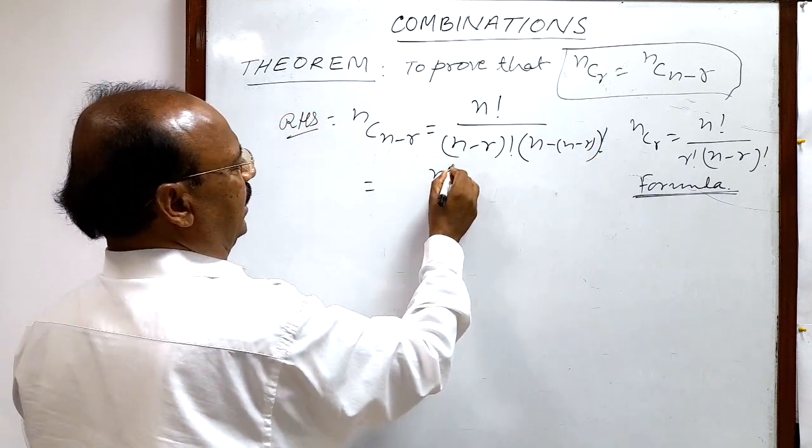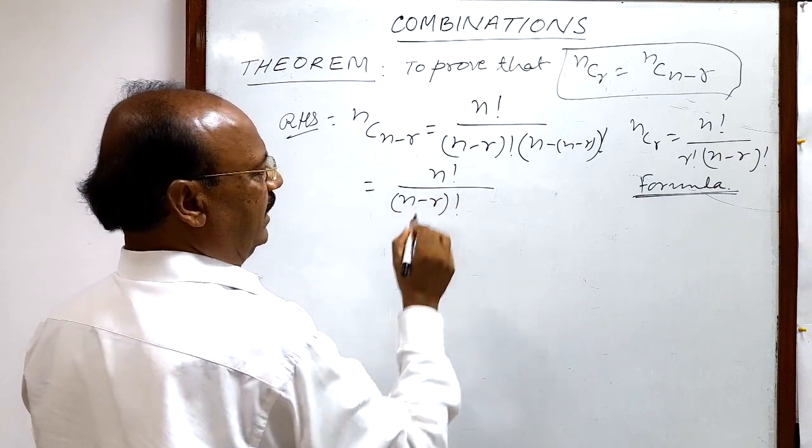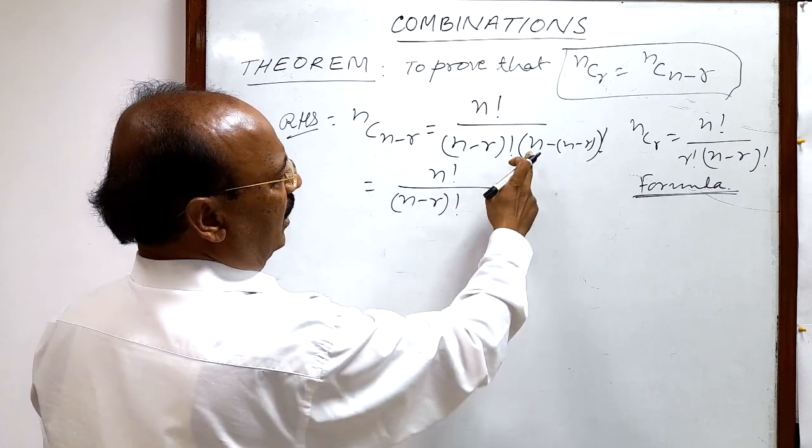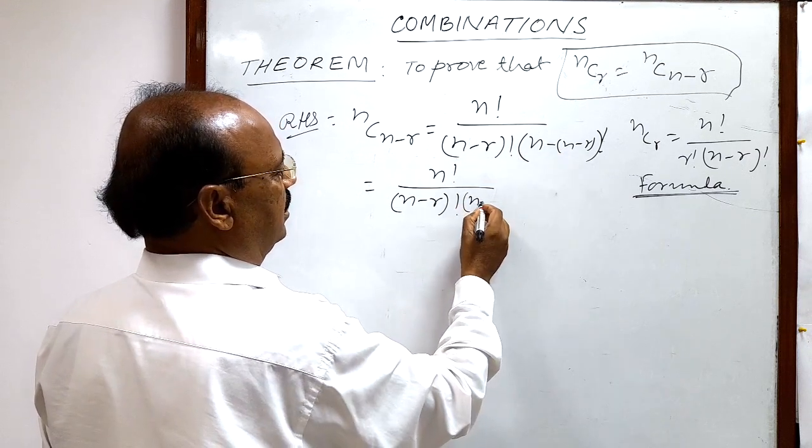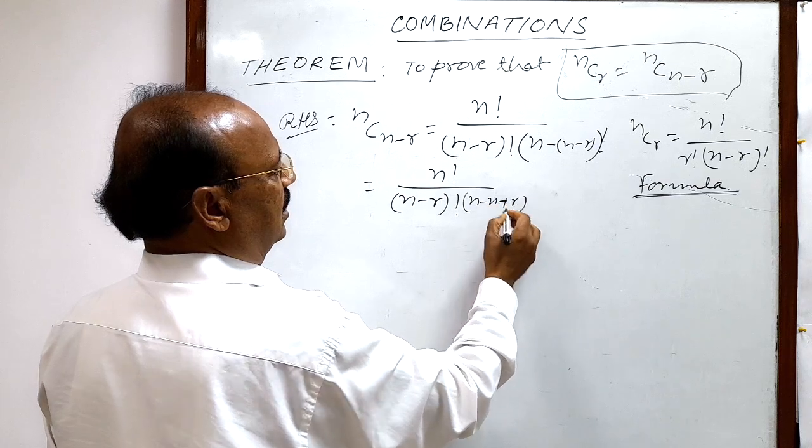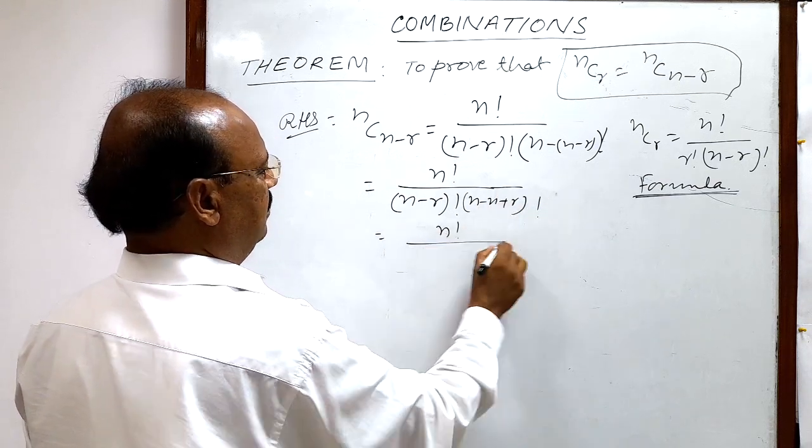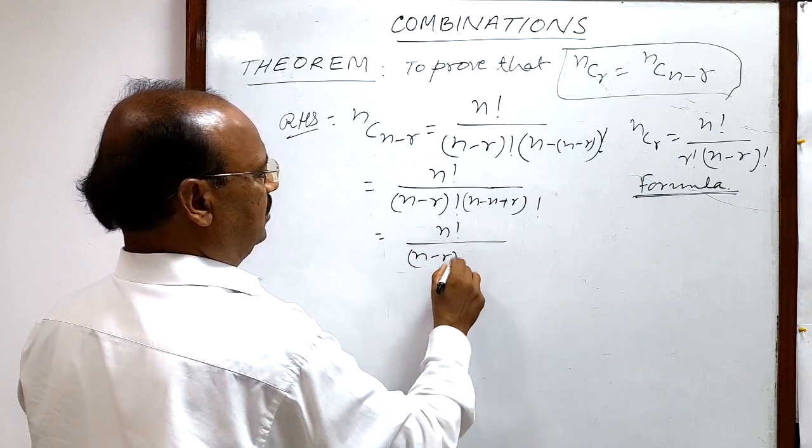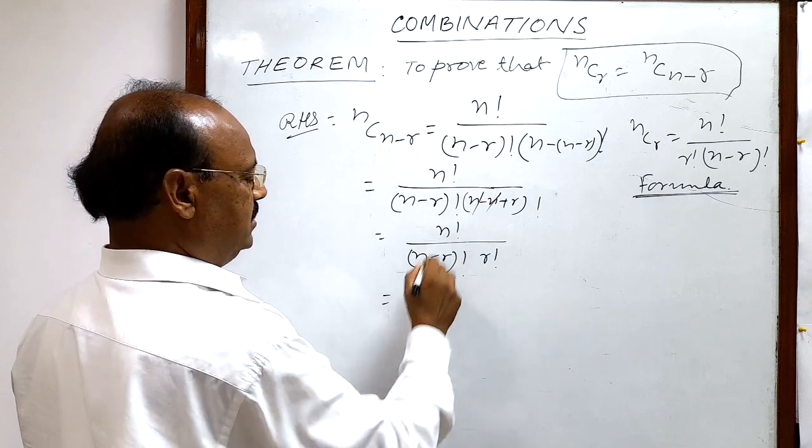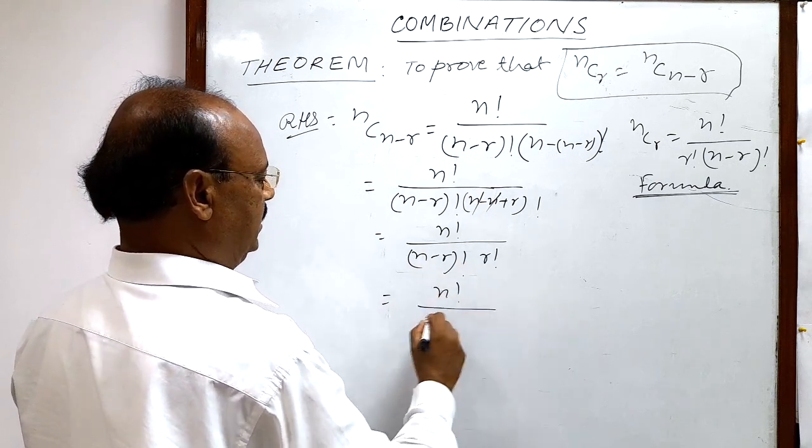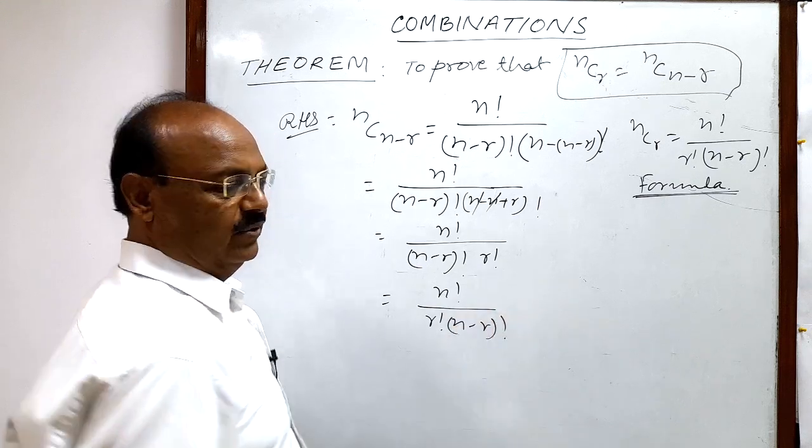And this is equal to n factorial by (n minus r) factorial, and here n and n will be cancelled out, so this is r factorial. So this is nothing but n factorial by r factorial (n minus r) factorial.